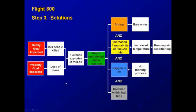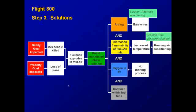Some of the solutions recommended after the explosion of Flight 800 were to use an alternate wire coating to reduce the risk of wires becoming uncovered, to use ground equipment when air conditioning or other power sources were needed while the plane was on the ground, and to use an inerting process within the fuel tanks.